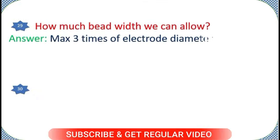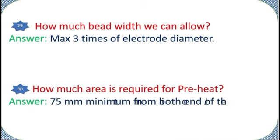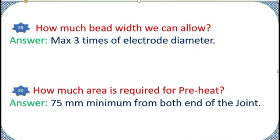How much bead width can we allow? Answer: Max 3 times of electrode diameter. How much area is required for preheat? Answer: 75 millimeters minimum from both end of the joint.